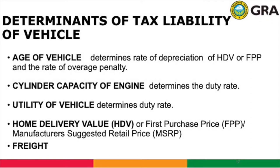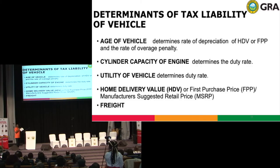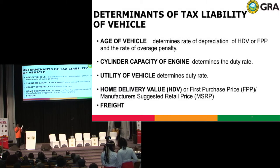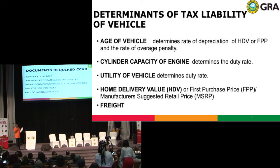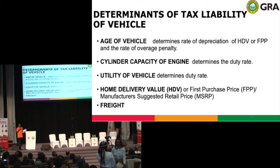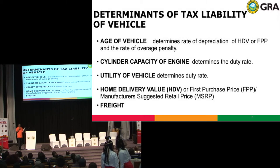These are the determinants of tax liability for a vehicle: the age of the vehicle, which determines the rate of depreciation of the home delivery value or first purchase price; the cylinder capacity of the engine, which also relates to the age; and the home delivery value of the vehicle, which is the first price the vehicle was sold when it was first manufactured — normally the manufacturer's suggested retail price (MSRP). That is what we take into consideration before assessing the duty liability.